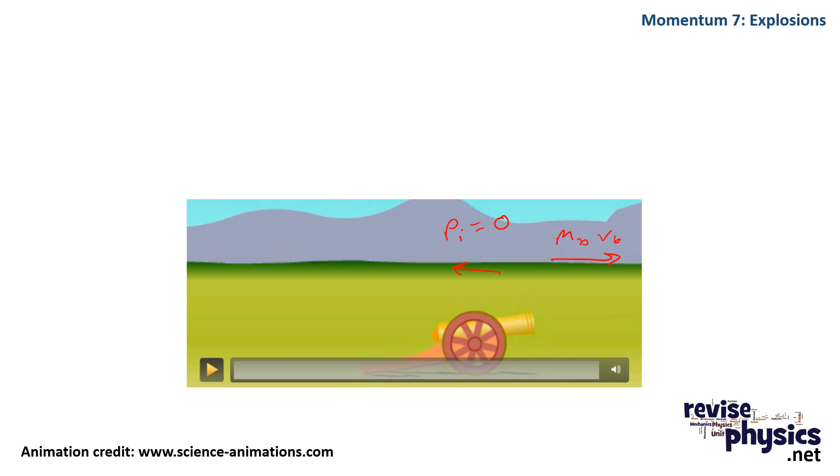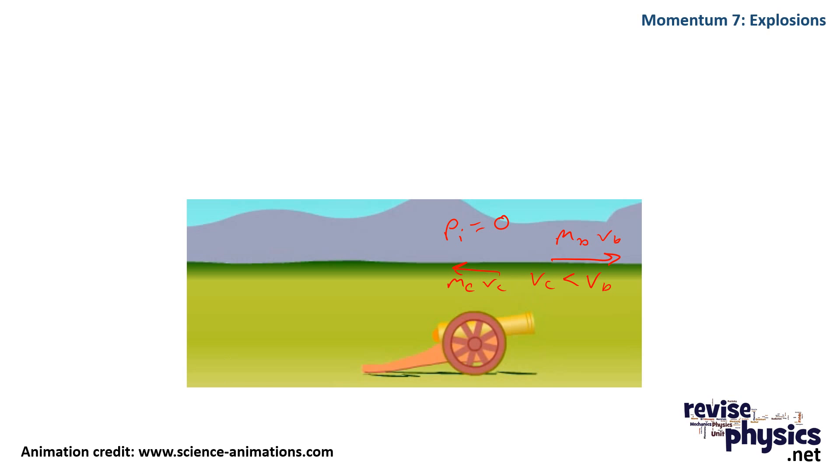the cannon having much more mass experiences the same momentum, but because it has more mass, v of the cannon is much smaller than v of the ball. And this application of the conservation of momentum is what we call an explosion.